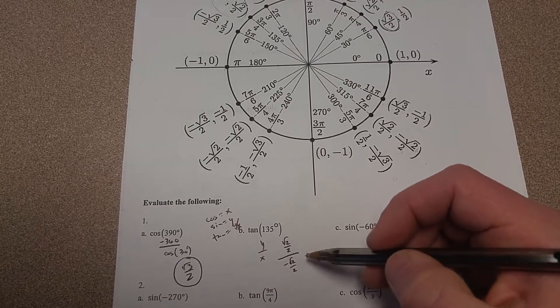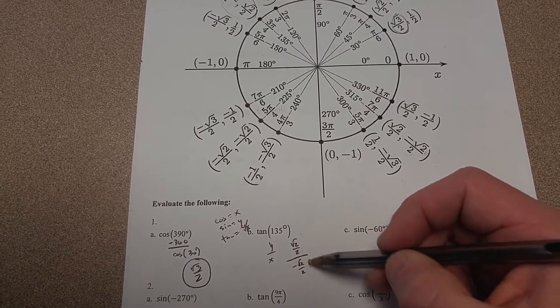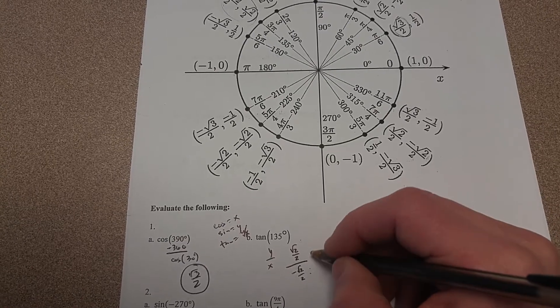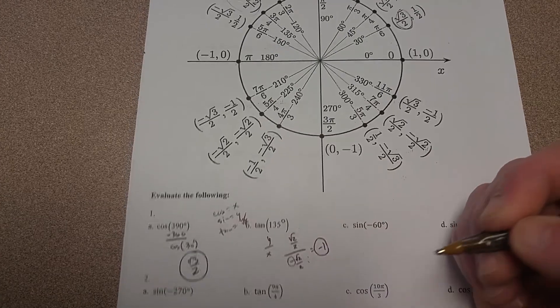You don't need to do keep change flip here if you recognize that this is exactly the same as this thing. When you have something divided by itself, the answer is 1. We have to keep in mind that there's a negative right there, so the answer here is going to be negative 1.